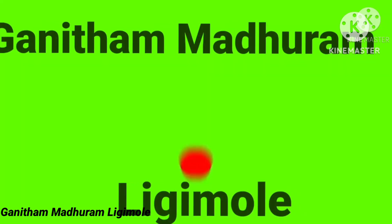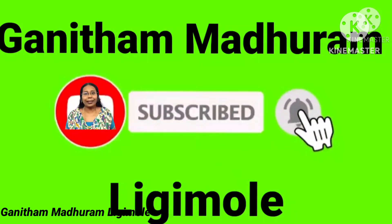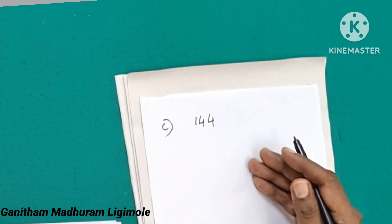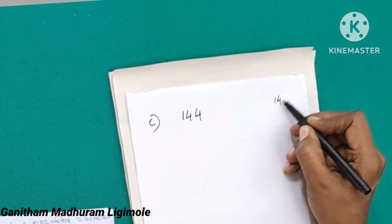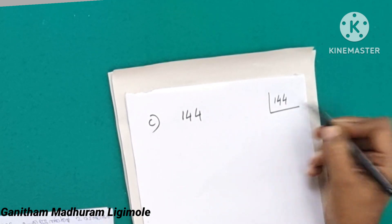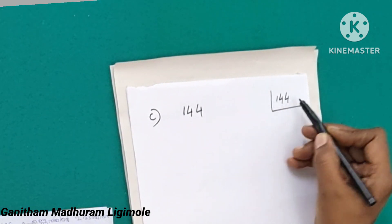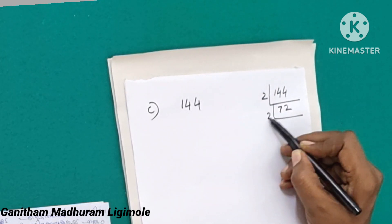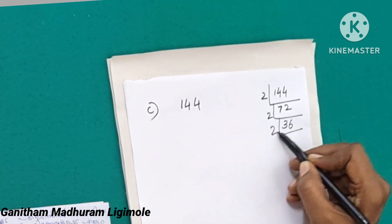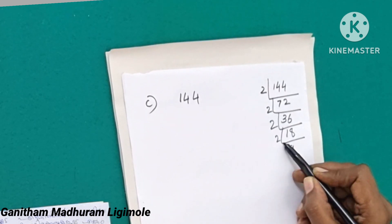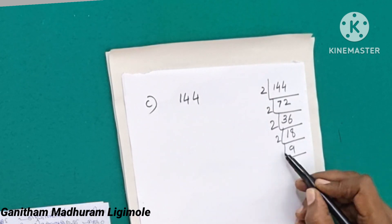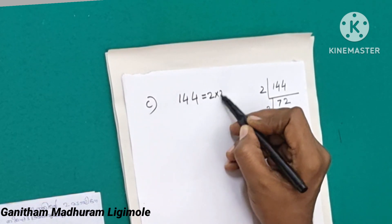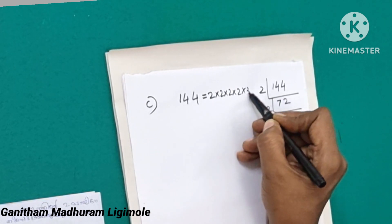Find all the factors of 144 and write them in a table. We are going to do one thing — what is 144? We have 144: 2, 2, 2, 3, 3, 3. Here is 12, this one is 12, 12 is 18, 13 is 18.